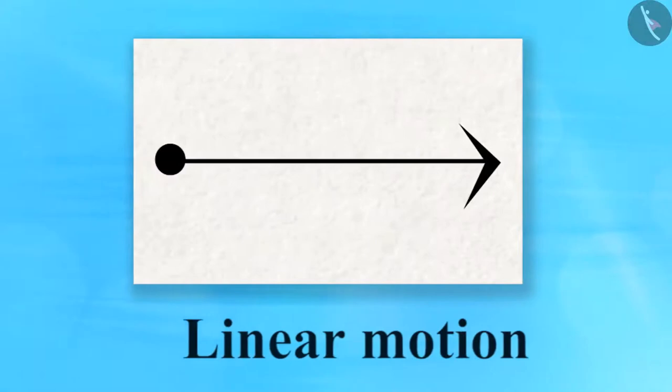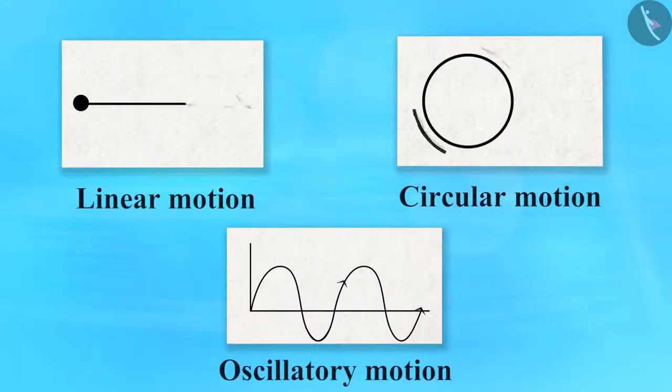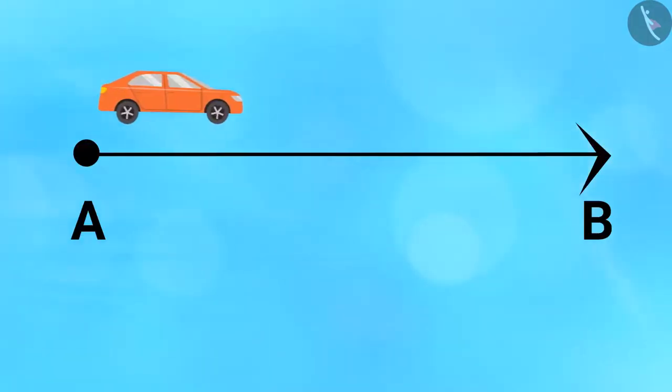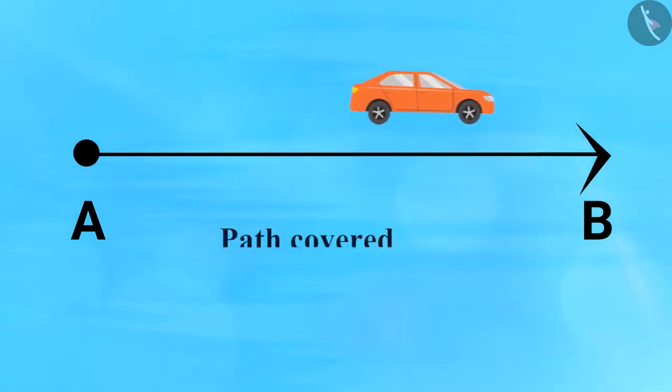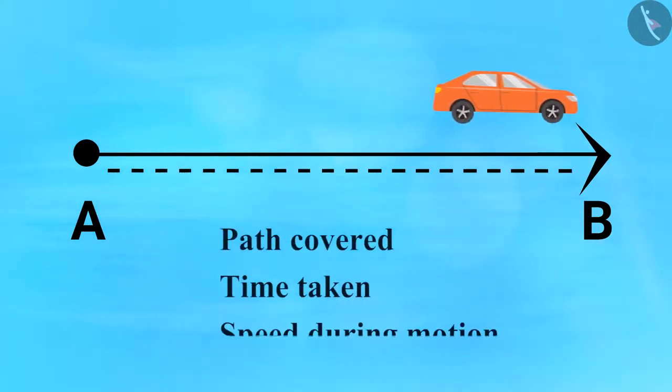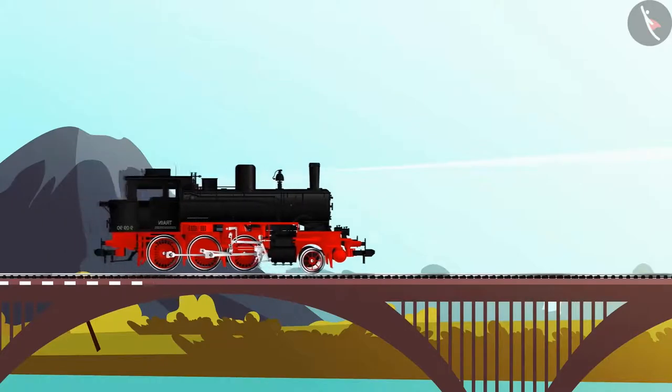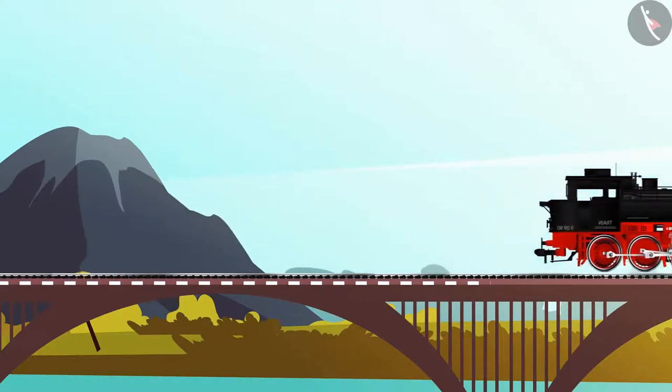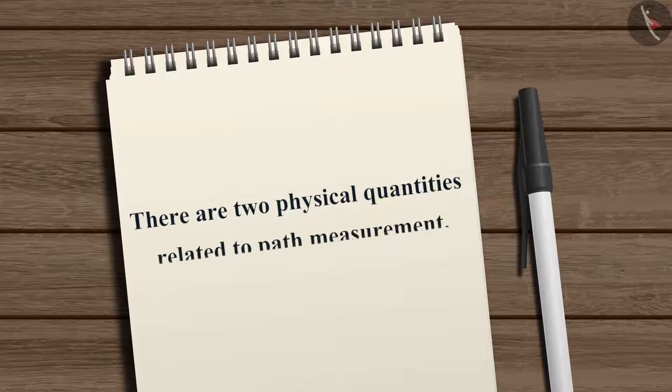While observing the motion of an object, we have to calculate certain parameters like path covered, time taken, and speed during motion. So first, let's discuss path measurement. There are two physical quantities related to path measurement: distance and displacement.